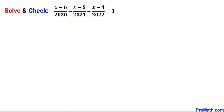Welcome to pre-math. In this video we are going to solve this given rational equation: (x minus 6) divided by 2020, plus (x minus 5) divided by 2021, plus (x minus 4) divided by 2022, equals 3. We are also going to check for any extraneous solutions.